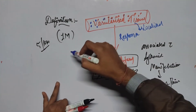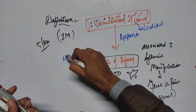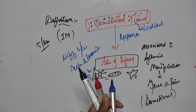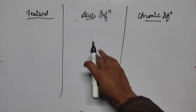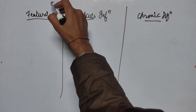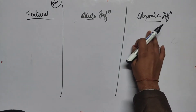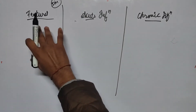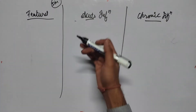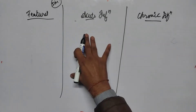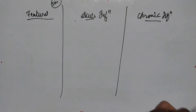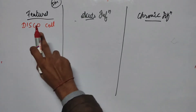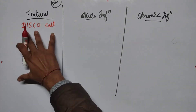Now, everything that occurs inside acute and chronic inflammation is almost the same with some differences. It's very important to know the difference between acute and chronic inflammation, especially as a physician. To help remember the differences, I'm introducing a mnemonic: DISCO CELL.